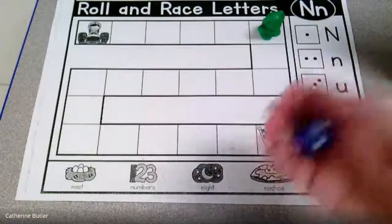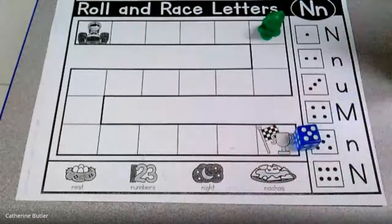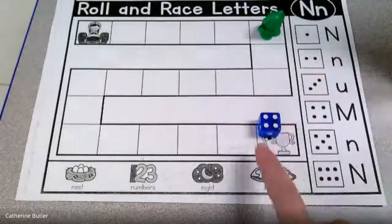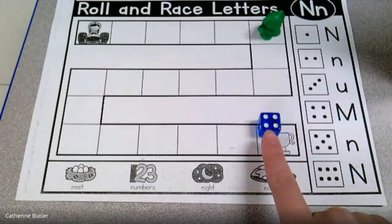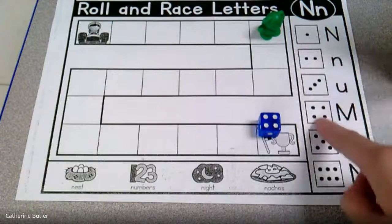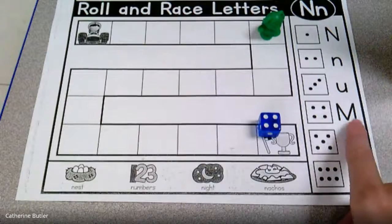But if I had a partner, they would go, but I don't. So I'm gonna keep rolling. Oh, I rolled another five. I'm gonna roll again. Alright, what did I roll? What number? Four. So I'm gonna look for that number four. Oh, there it is.